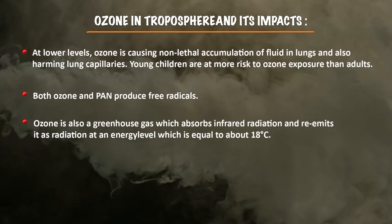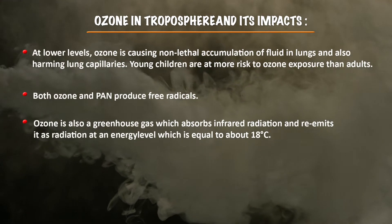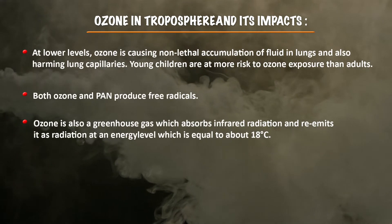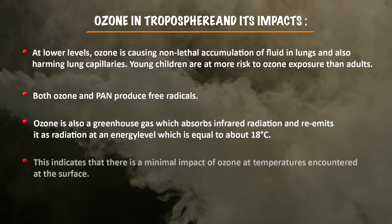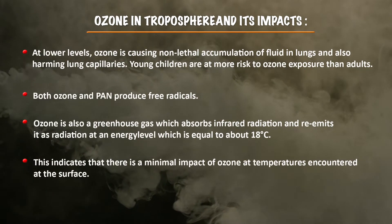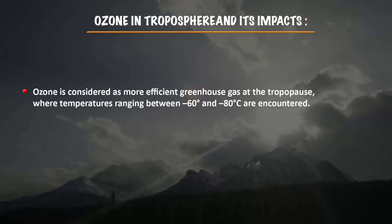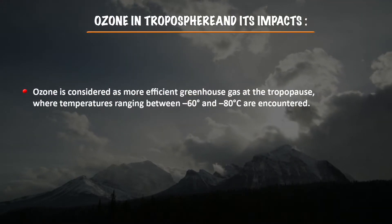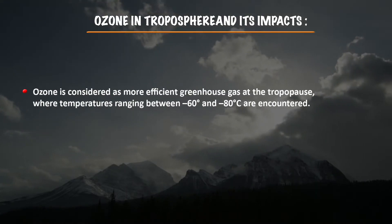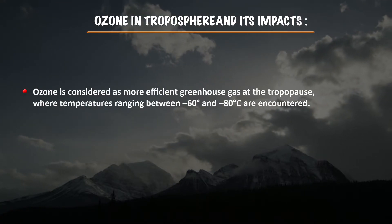Both ozone and PAN produce free radicals. Ozone is also a greenhouse gas that absorbs infrared radiation and re-emits it at energy levels equivalent to about 18 degrees Celsius, indicating minimal impact at surface temperatures. Ozone is considered a more efficient greenhouse gas at the tropopause, where temperatures range between minus 60 to minus 80 degrees Celsius.